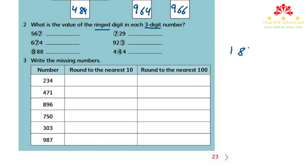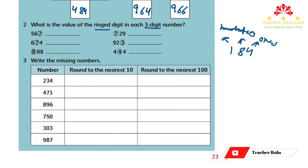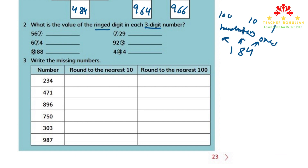For example, if you have a number like 184: 4 is in the ones place, 8 is in the tens place, and 1 is in the hundreds place. The value of a digit in the ones place is multiplied by 1, in the tens place multiplied by 10, so 8 times 10. And in the hundreds place multiplied by 100, so 1 times 100 equals 100.